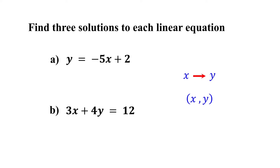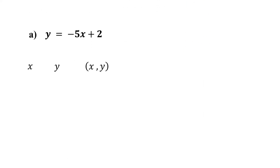Let's see how this works with our examples. When y is by itself on one side of the equation, as in this example, it is usually easier to choose values for x and then solve for y. Since we are finding three solutions, let's pick three values for x: x equals negative 1, 0, and 2. You can pick other values, but it is best to choose those that make the calculations easier.